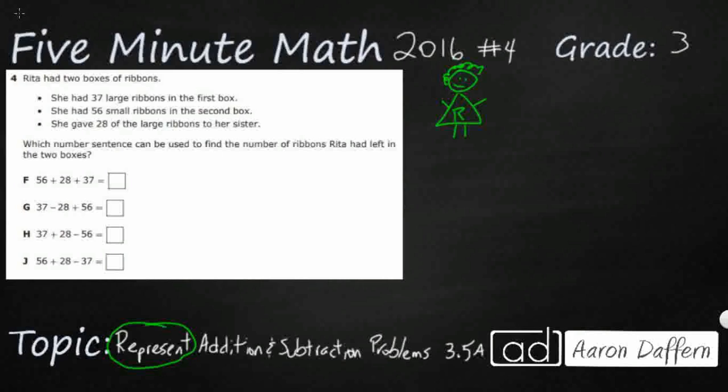So Rita has got two boxes. Alright, so I'm going to put two boxes right here. And in the first box, I'll just put first, she has 37 large ribbons. So I'm just going to put 37, and then L. And then in the second box, it looks like she's got 56 small ribbons. So I'm going to put 56, and I'll put a little S to let me know this is a small ribbon.